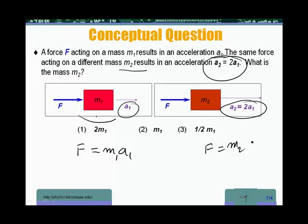So we calculate for m1. We are going to calculate m1 is equal to F over a1, since they are asking us about masses. So that's what we are going to do. And here, m2 is F over a2. And since a2 we know it's twice a1, so it's F over twice a1.